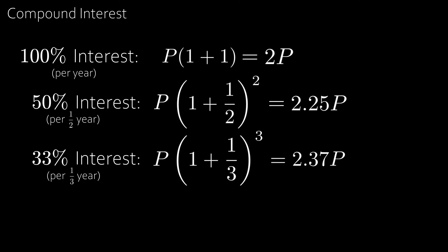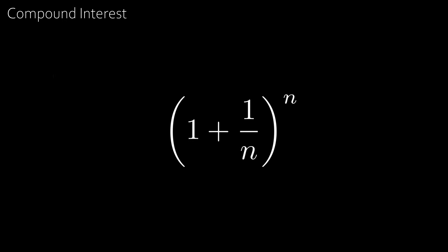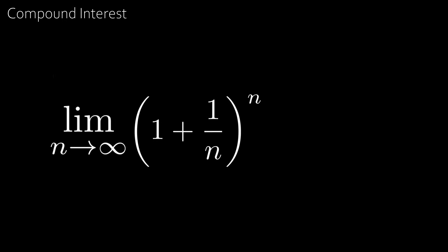We see that this value gets larger and larger the more times interest is imposed. If we keep going, then 100/n percent interest every one nth of the year gives us a final value of P times (1 + 1/n)^n. Because it keeps growing, we want to find the maximum value — essentially the limit as n approaches infinity of (1 + 1/n)^n.